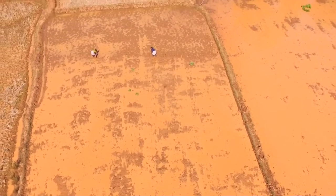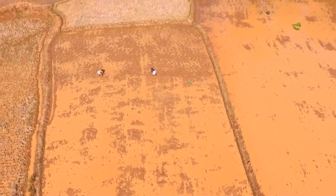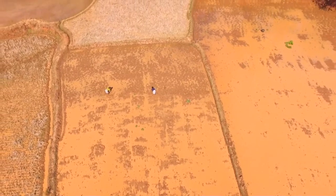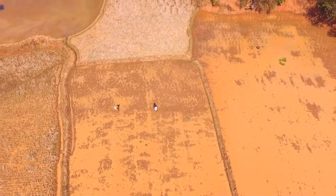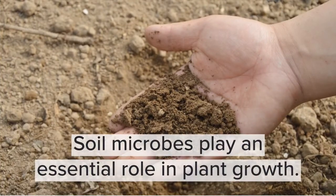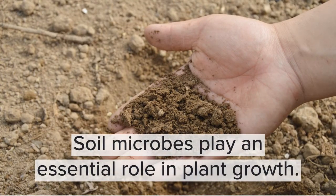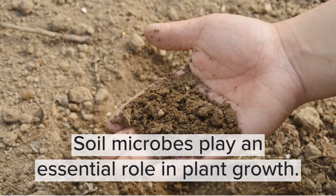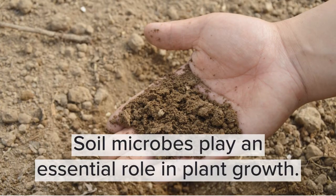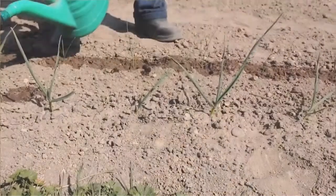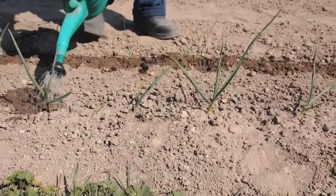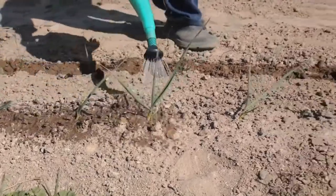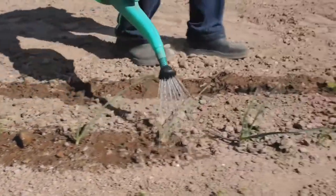5. Land use change is the process by which humans transform the natural landscape of a piece of land. Agricultural land use degrades soil quality, and over time, the soil's chemical and physical properties may change. Consequently, this can reduce the number of microorganisms in the soil. Soil microbes play an essential role in plant growth — they aerate the soil and allow plants to recycle nutrients. Without them, some plants may fail to grow in an ecosystem.